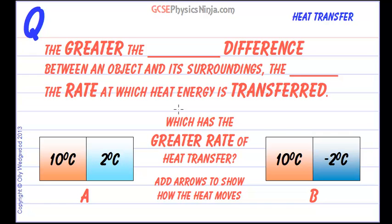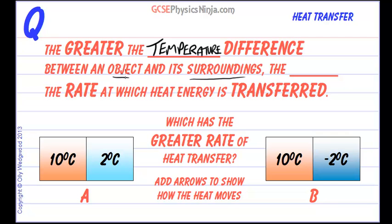The greater the temperature difference between an object and its surroundings — it doesn't have to be between two objects, it could be an object and what it's surrounded by, air for example — the greater the rate at which heat energy is transferred.